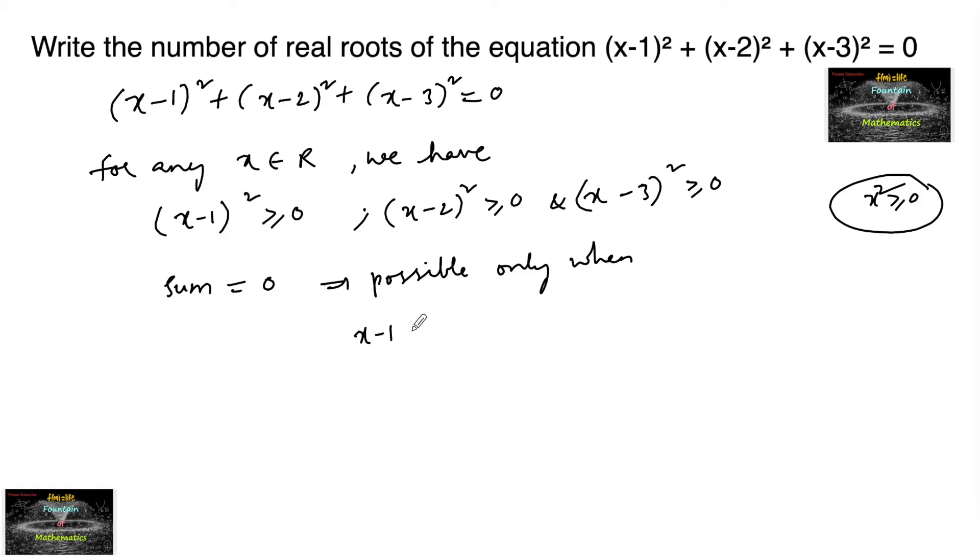That is (x-1)² is equal to 0, (x-2)² is equal to 0, and (x-3)² equals to 0. That is x-1 equals to 0, x-2 equals to 0, and x-3 must be equal to 0.